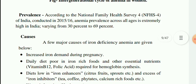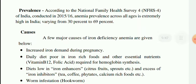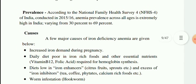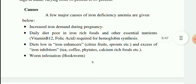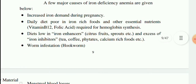According to the National Family Health Survey 4 of India, conducted in 2015–16, anemia prevalence across all age groups is extremely high in India, ranging from 30% to 69%. A few major causes of iron deficiency anemia include increased iron demand during pregnancy, a diet poor in iron-rich foods and other essential nutrients such as vitamin B12 and folic acid required for hemoglobin synthesis.